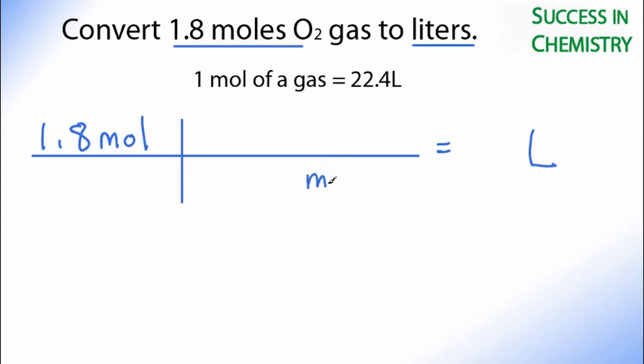And we want moles on the bottom. That way the moles here will cancel out. And we need liters on the top, because that's what we want as our final answer. So we remember one mole is 22.4 liters, and moles will cancel out for us.